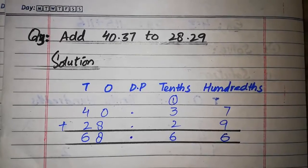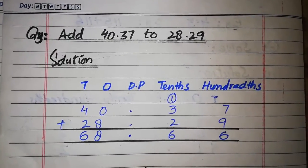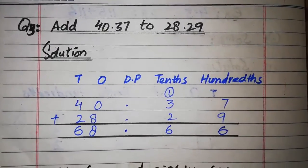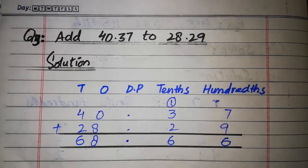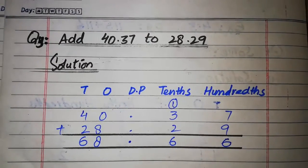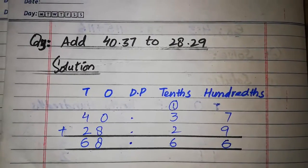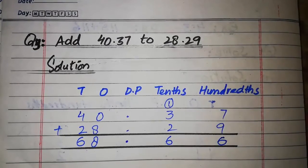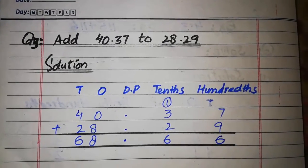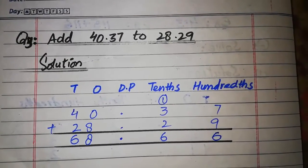The answer is 68 point 66. This is question number 3۔ Addition ہم نے کر لی — so addition سے ہمارے پاس answer آیا 68 point 66۔ اب ہم جائیں گے next کی طرف: question number 4.